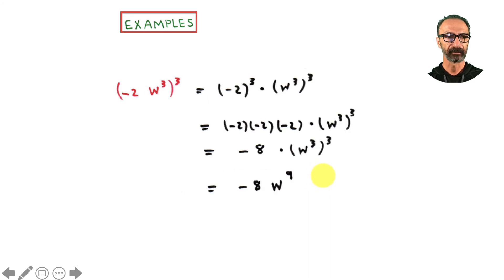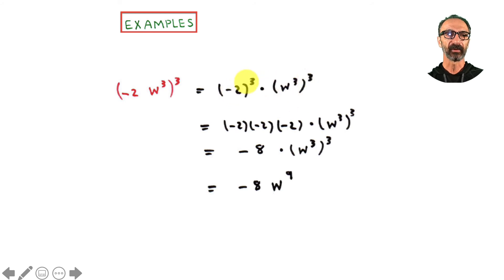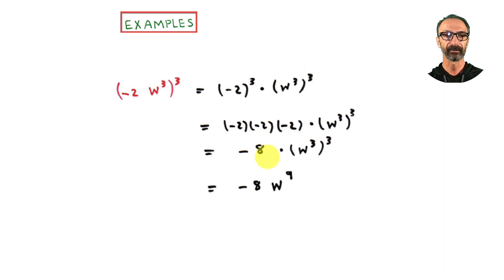Another example: apply the power to both factors a times b — you can see the exponent of three applied to each. Negative two to the third means negative two times negative two times negative two, which is negative eight, not positive eight. Applying the power rule for the other factor: three times three equals nine. So the final answer is negative eight w to the ninth.